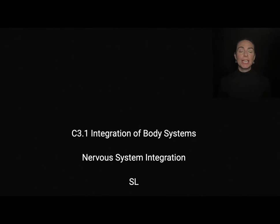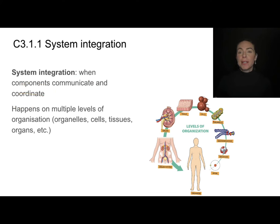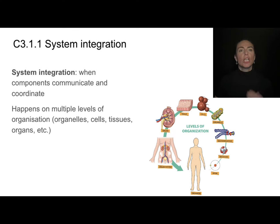In this video, we'll take a look at some of the standard level content from the integration of body systems topic, and we'll take a deeper dive into nervous system integration. When we say integration, what we really mean is coordination and communication. This could happen between two cells in a tissue, between two tissues inside of an organ, or between two organ systems. We need to be thinking about multiple levels of coordination and communication.